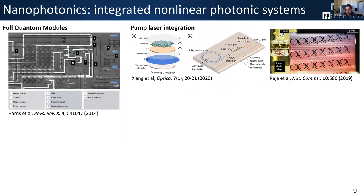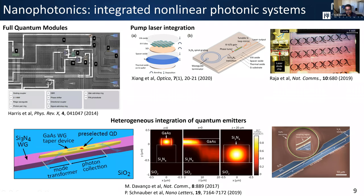In the classical integrated photonics community there's been a lot of work developing integration of laser sources together with nonlinear nanophotonics. Work from John Bauer's group at UC Santa Barbara developed heterogeneously integrated lasers on silicon nitride. Work from Tobias Kippenberg's group at EPFL shows hybrid integration of laser gain chips with nonlinear nanophotonics chips. There have also been groups looking at integration of single quantum emitters with photonic platforms compatible with nonlinear optics — our group looked at integration of single gallium arsenide quantum dots in gallium arsenide together with silicon nitride nanophotonics, where silicon nitride gives low loss and chi-3 nonlinearity.